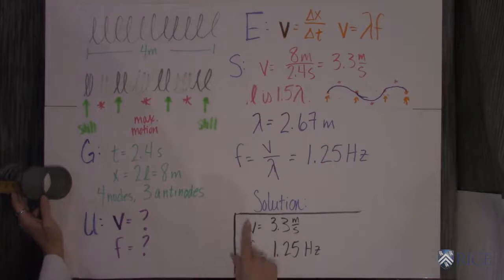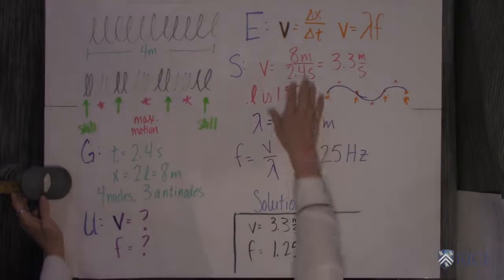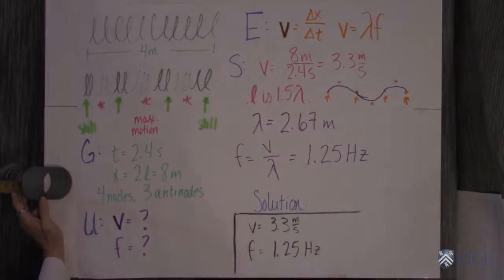So let's figure out what the velocity is. The velocity is pretty straightforward, right? You have a distance and you have a time. So we go back to kinematics. Velocity is distance over time. It's eight meters divided by 2.4 seconds. So you know your velocity of this pulse is 3.3 meters a second.